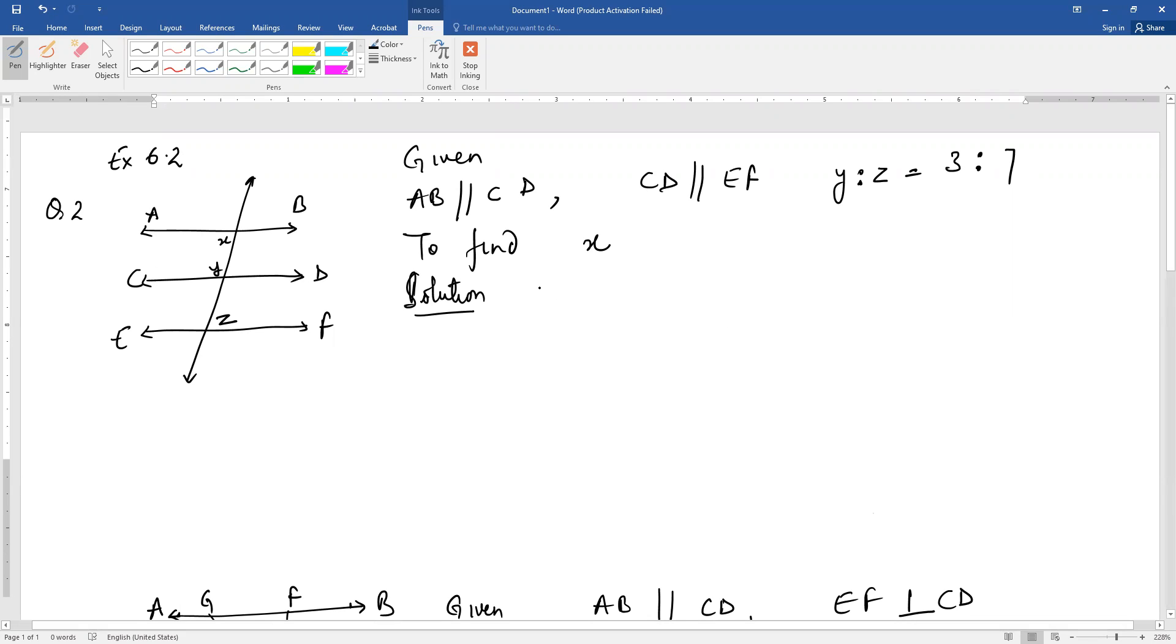Now AB is parallel to CD and CD is parallel to EF. That means two lines are parallel to the same line, which implies AB is parallel to EF. Lines parallel to the same line are parallel to each other.